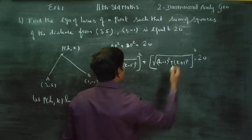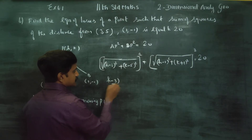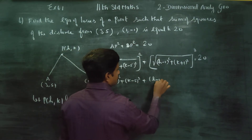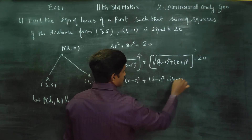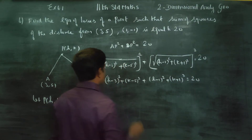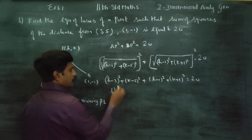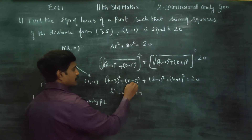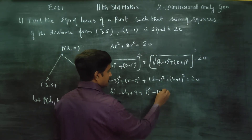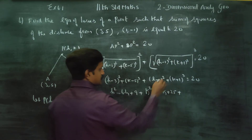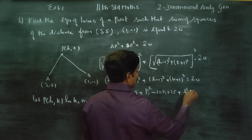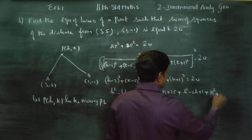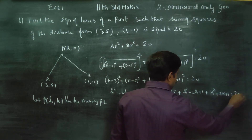Now, (h minus 3)² plus (k minus 5)², plus (h minus 1)² plus (k plus 1)² is equal to 20. What is (a minus b)²? a² minus 2ab plus b². What is (a plus b)²? a² plus 2ab plus b² is equal to 20.